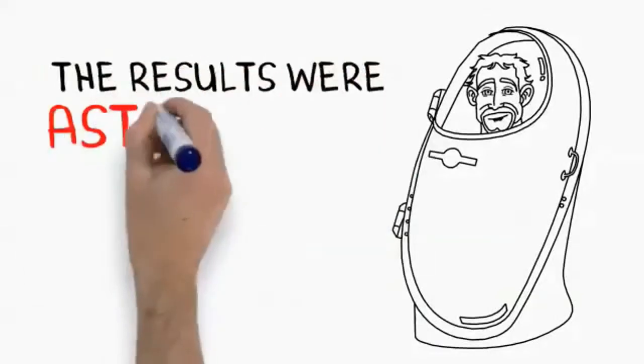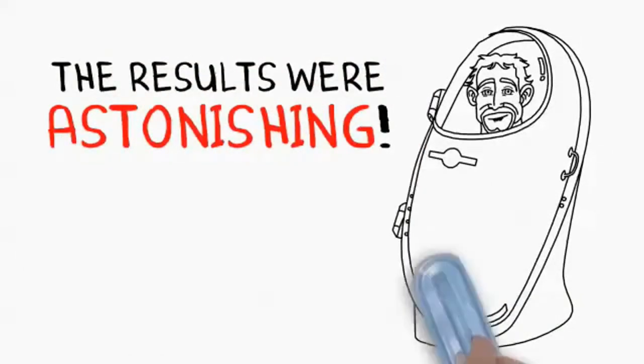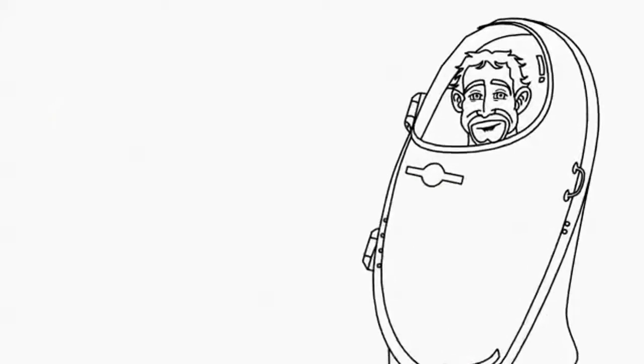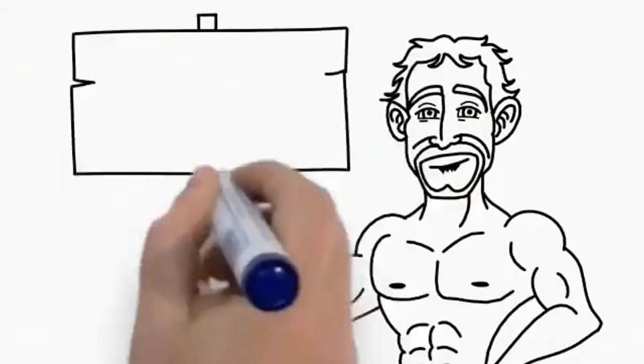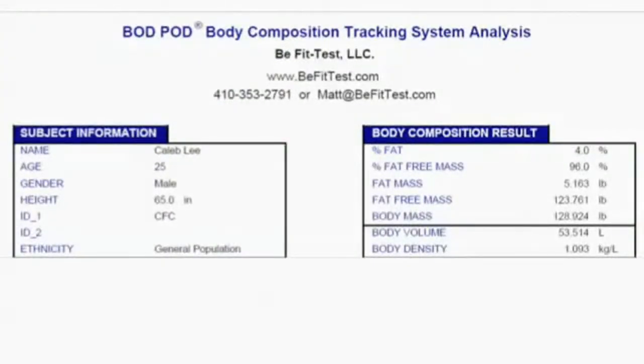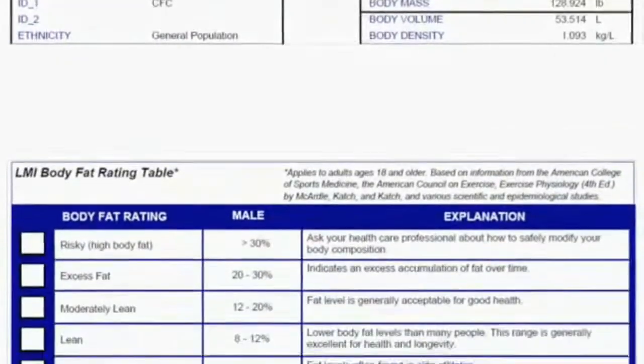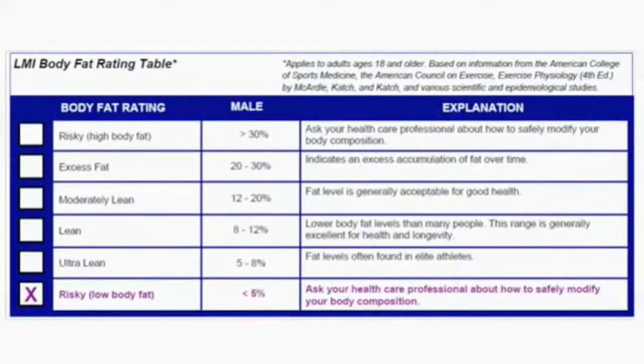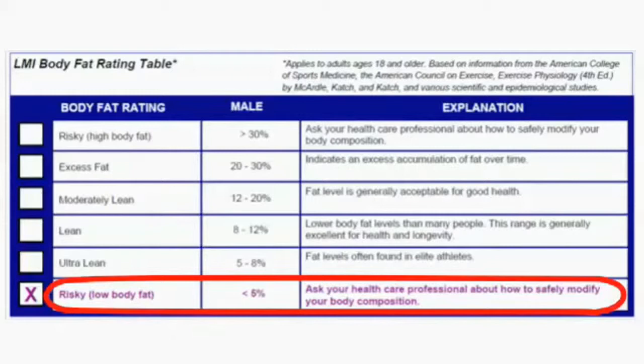The results, though, were astonishing. The scientific testing proved beyond a shadow of a doubt, only 4% of my body was actually fat. I couldn't believe it either, but then the body composition results came back, and you can see only 4% of my total body weight was fat. In fact, as you can see further down the sheet under the body fat rating table, they labeled my body fat percentage as risky.